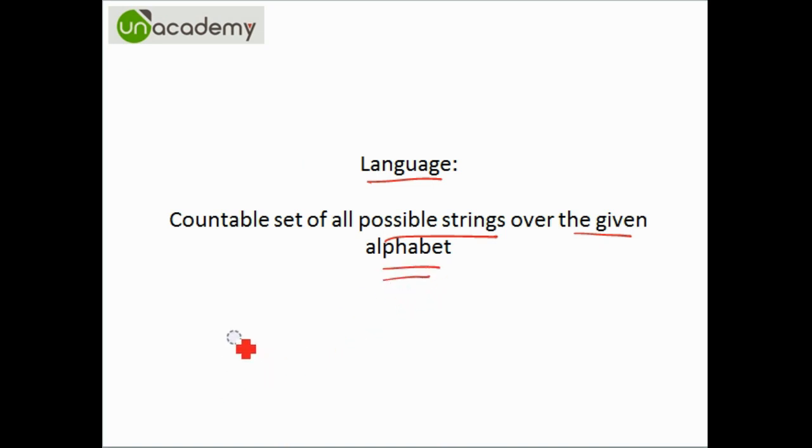To understand this, let us take the example of English. English has 26 alphabets, and these 26 alphabets form the entire language. So English is a language over these 26 alphabets.